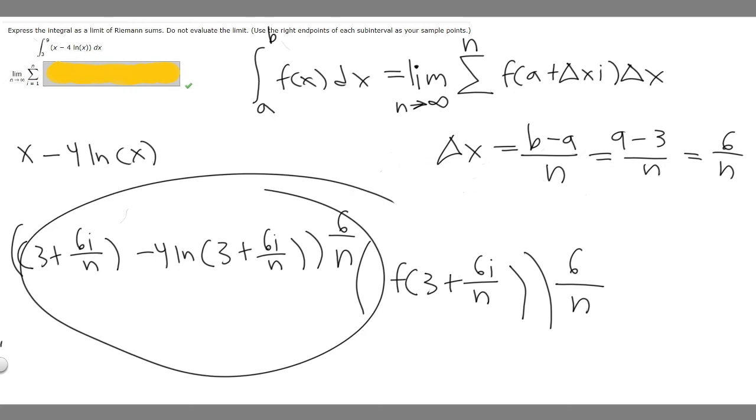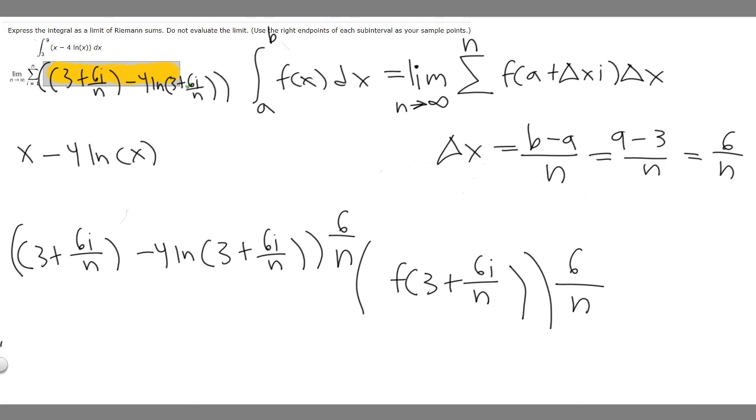And so this right here is going to be the answer to our problem, so I'll rewrite it up here. So we have (3 + 6i/n - 4) times ln(3 + 6i/n) multiplied by 6 over n. So this right here, or basically this, is going to be the answer to this problem.